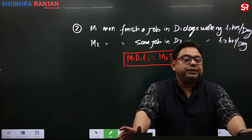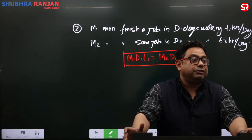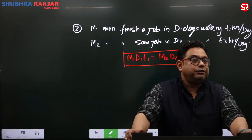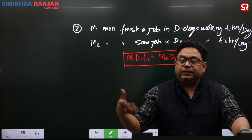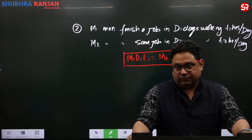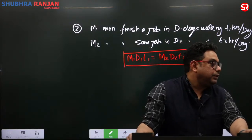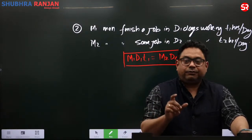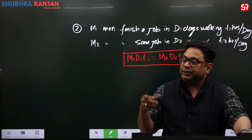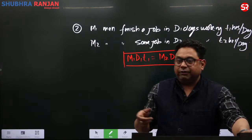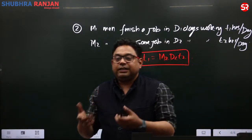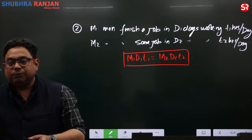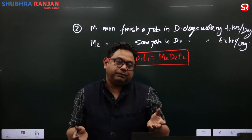If a road is being made, the length of the road is the work. If a well is being dug, the depth of the well is the work. If items are being made, the number of items made is the work. If an engine runs on coal, the amount of coal consumed is the work.